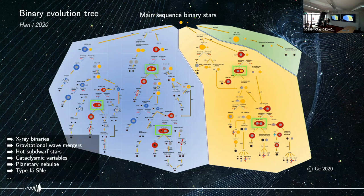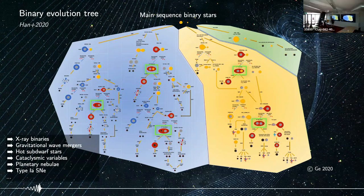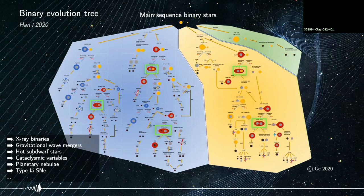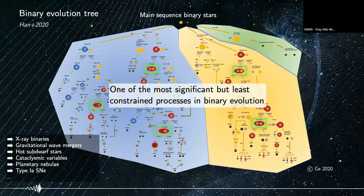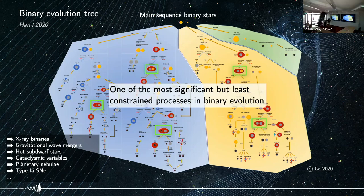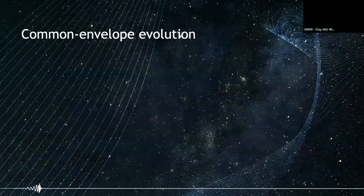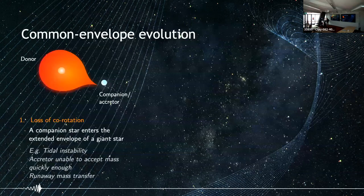The common envelope phase is a very central part of many of these processes, particularly for forming tight compact binaries. However, it is also one of the most uncertain processes in binary evolution, despite its importance. I'll first briefly describe what the common envelope phase entails.